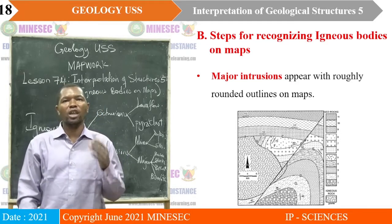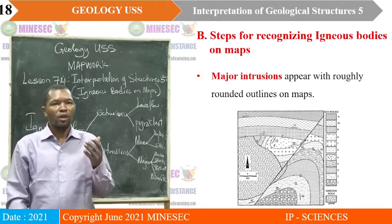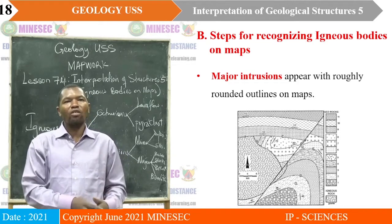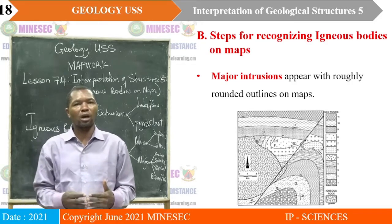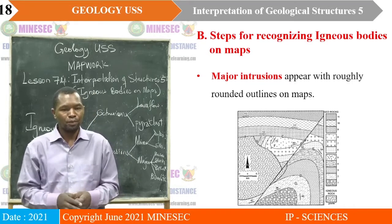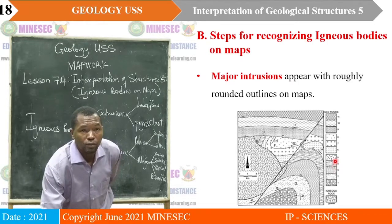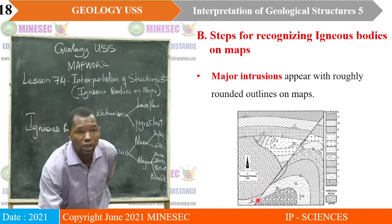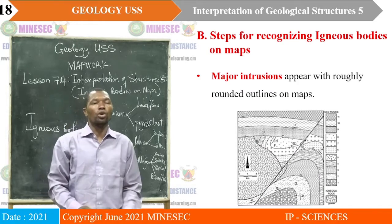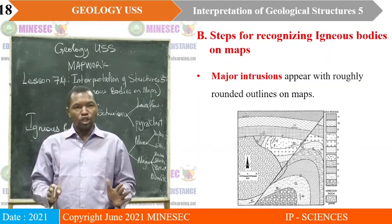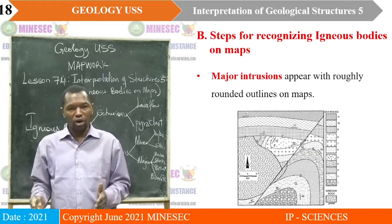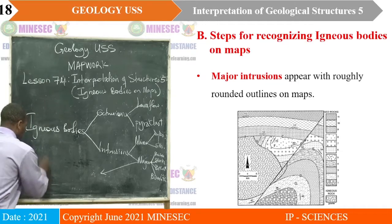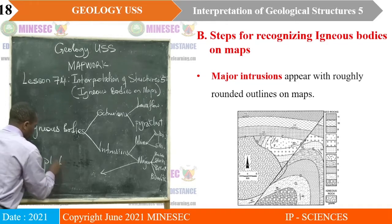Steps for recognizing igneous bodies on maps. First step: major intrusions appear with roughly rounded, semi-circular outlines on maps. Like the case of this map — you will see that this is a semi-circular body, which marks a major intrusion. Major intrusions are related to plutonic rocks.